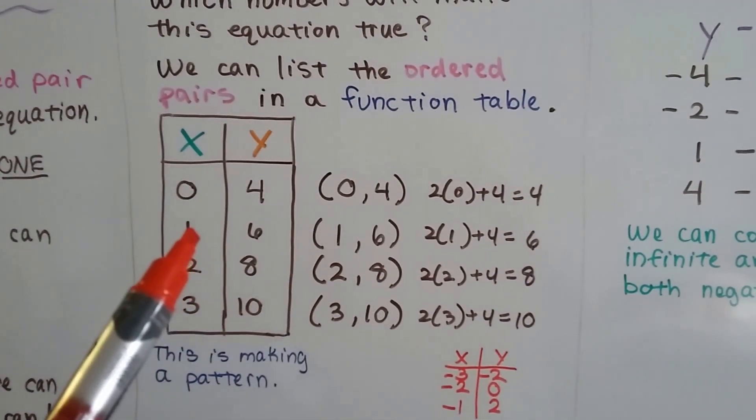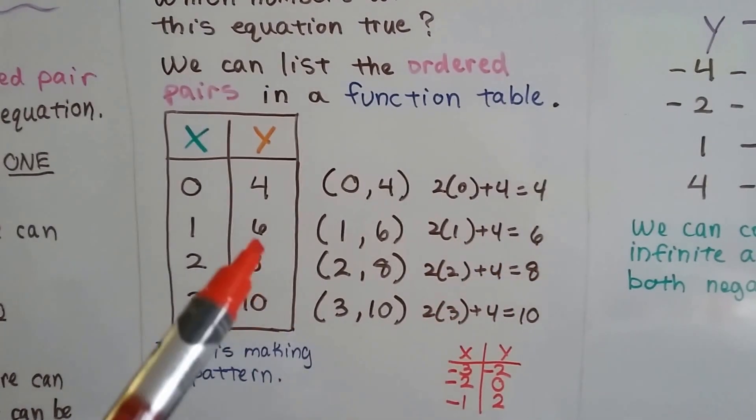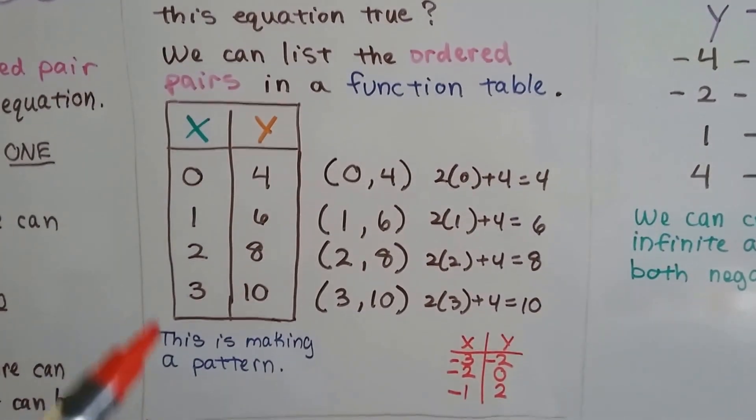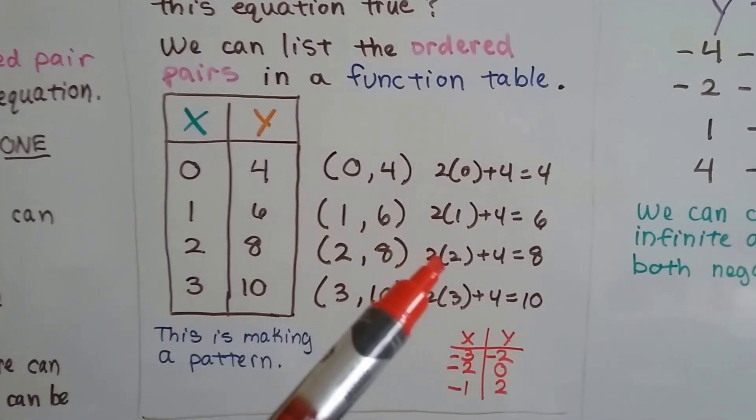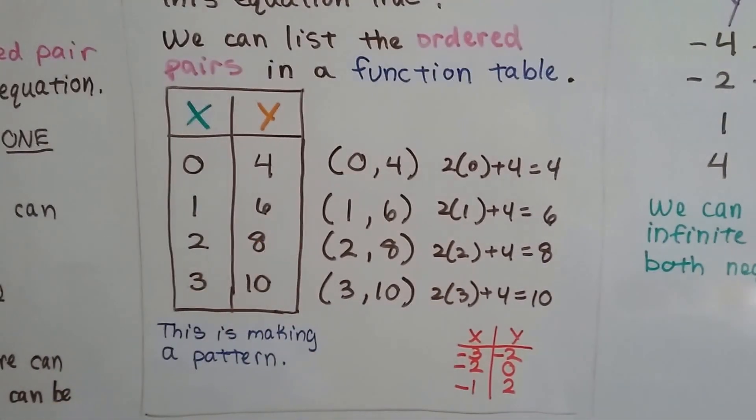And if the x value is a 1, then we have 2 times 1 is 2 plus 4. Then our y value is 6 and we can write that into our table. If x is a 2, then we have 2 times 2 is 4 plus 4. That makes the y value an 8 and we can write that into our table.